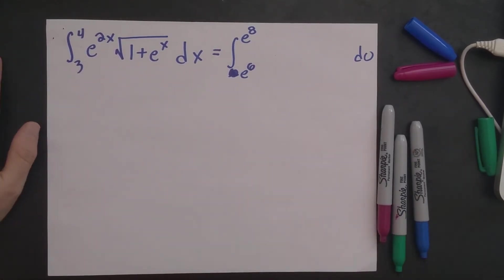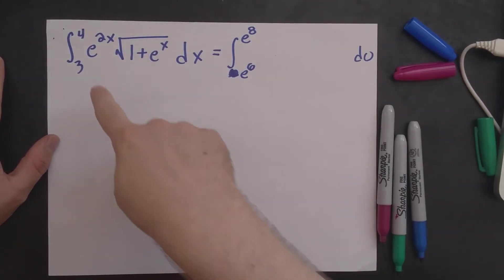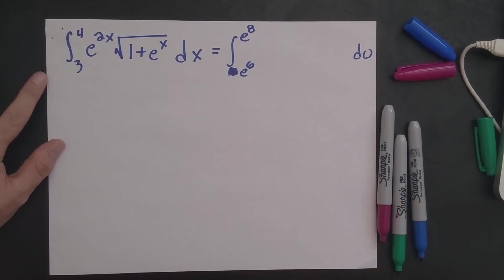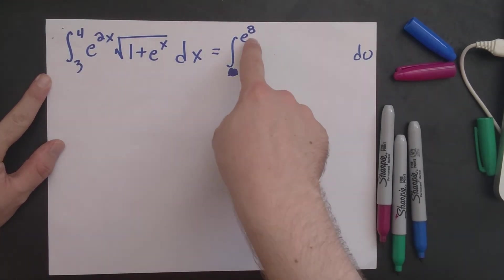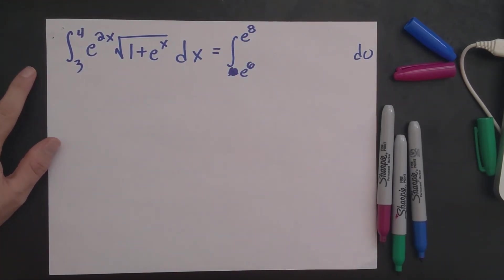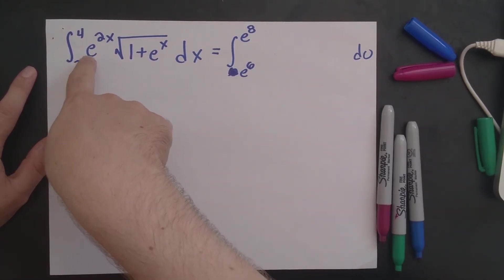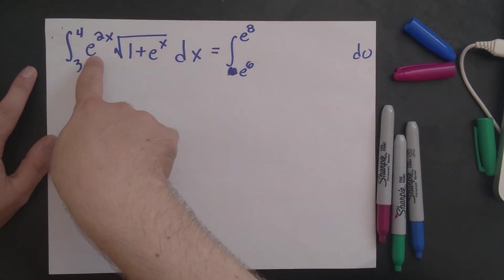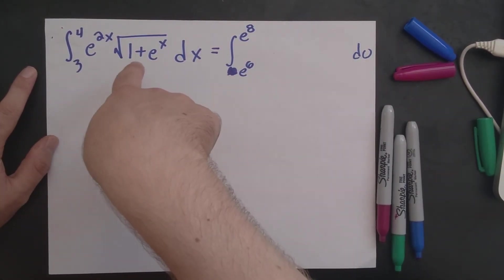And then finally, the last one that I want to go over is this problem here. The integral from 3 to 4 of e to the 2x times the square root of 1 plus e to the x dx is equal to this integral over here. And the key thing that we have to realize is that we are given bounds here of e to the 6 and e to the 8 here. So you might wonder, because the problem said, what goes in here? What's the integrand? So you might wonder whether to set u equal to 1 plus e to the x, or just u is equal to e to the x.